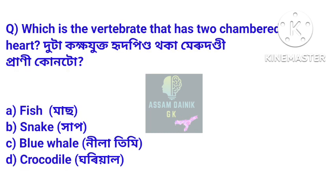Which is the vertebrate that has a two-chambered heart? Dutha kaikha jukta ritpinda thaka mirudandi prani kuntu. Answer: Fish. Masar — fish has a two-chambered heart.